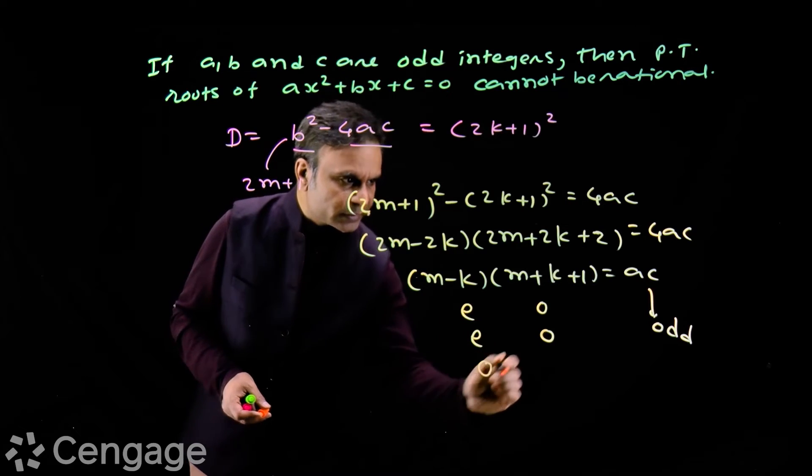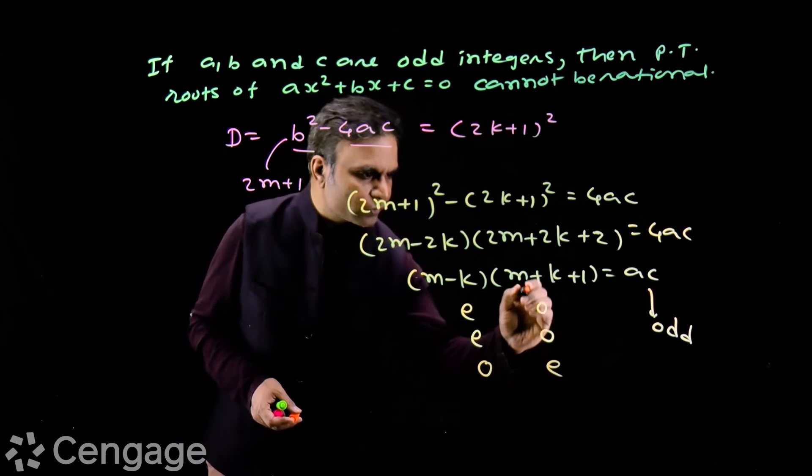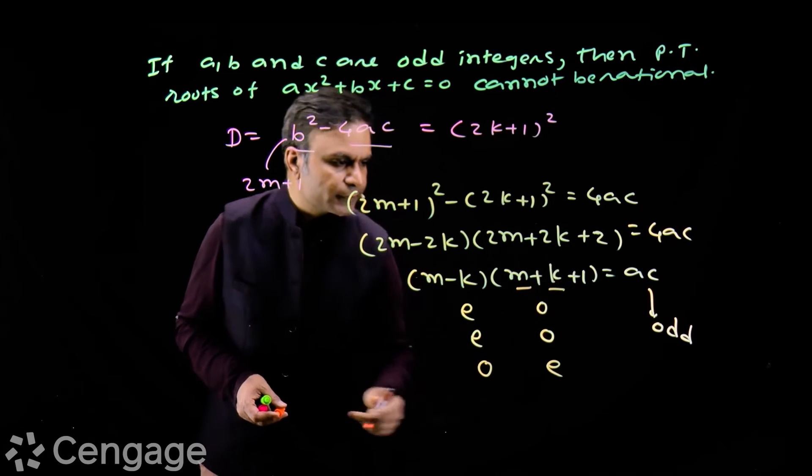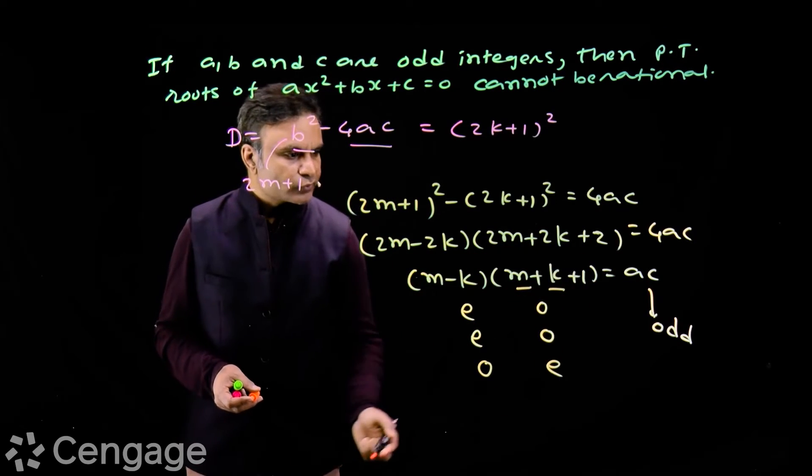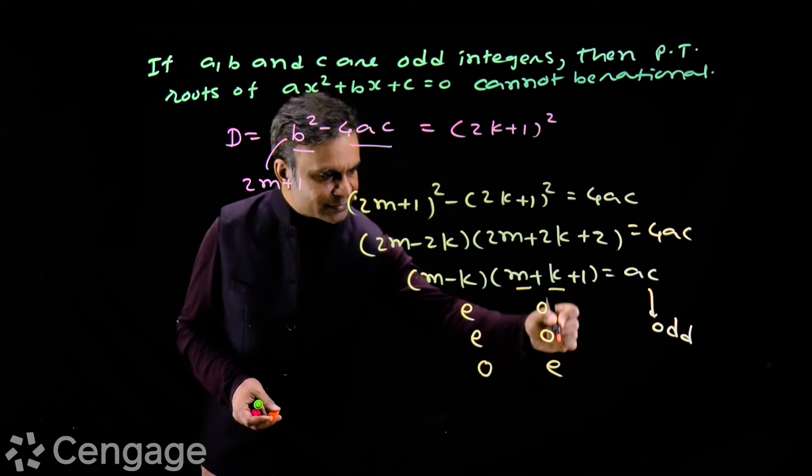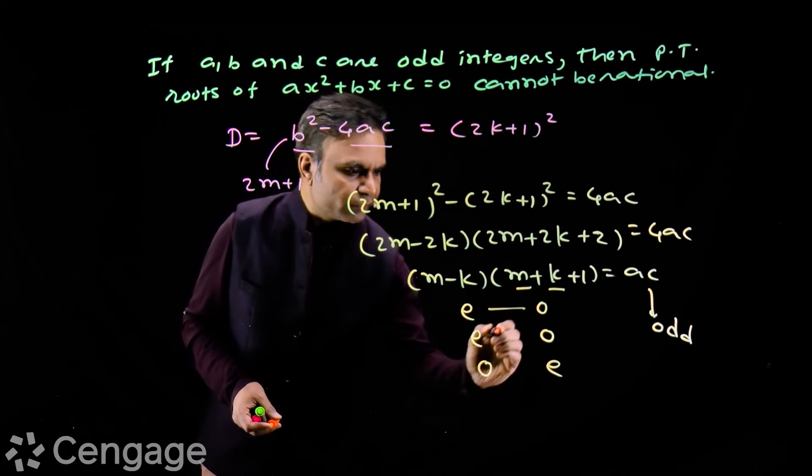And if one of m and k is odd and other is even, in that case m-k will be odd integer and this will be even integer, because even plus odd is odd, odd plus one is even.